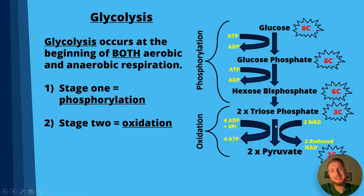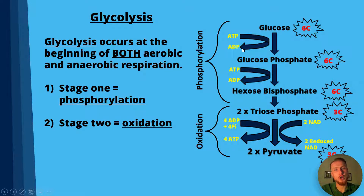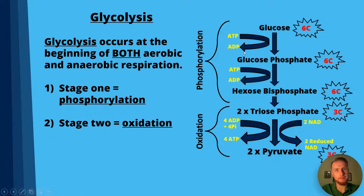In stage two we have the production of four molecules of ATP, and because we use 2 ATP at the beginning, that gives us an overall net gain of 2 ATP per glycolysis reaction. Now let's look at the lactate pathway.